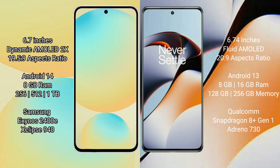Samsung Galaxy S24 FE features a 6.7-inch Dynamic AMOLED display with a 19.5:9 aspect ratio. OnePlus 11R features a 6.74-inch AMOLED display with a 20:9 aspect ratio.